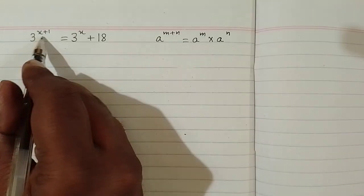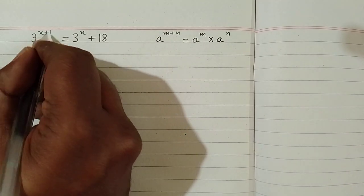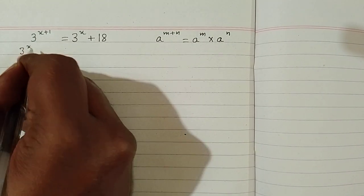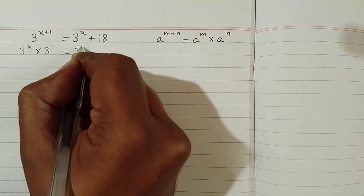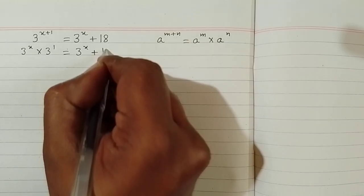So we can apply this rule over here so 3 to the power x plus 1 can be written as 3 to the power x multiplied by 3 raised to the power 1 is equal to 3 raised to the power x plus 18.